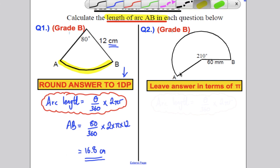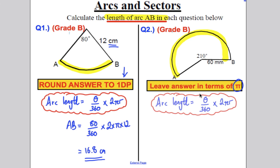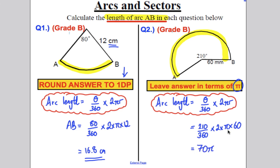Next, we're asked for the arc length AB and to leave our answer in terms of pi. The formula for arc length is (θ/360) × 2πr. So this equals (210/360) × 2 × π × 60. Typing that into the calculator, we get 70π. The unit is millimetres, so the answer is 70π millimetres.